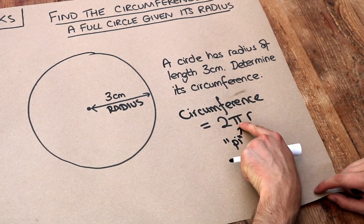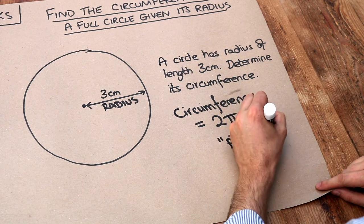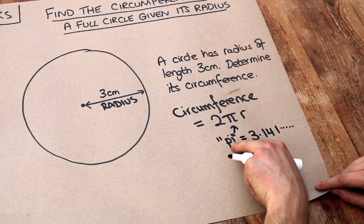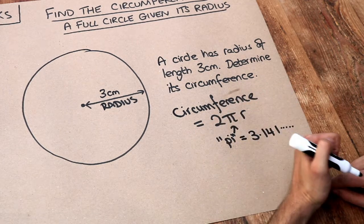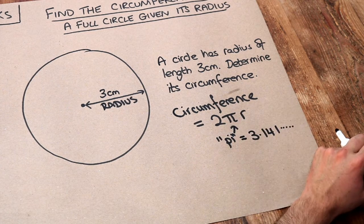Now this is just a fixed number pi and the value of pi is equal to 3.141 and the digits go on forever. You don't need to remember the value of pi because you can input it directly onto your calculator. If you look on your calculator, you should be able to find that pi button.